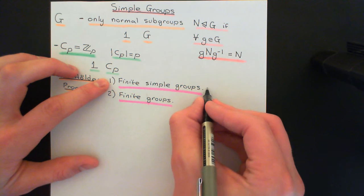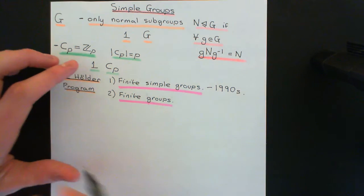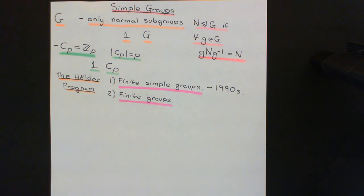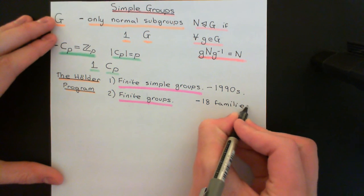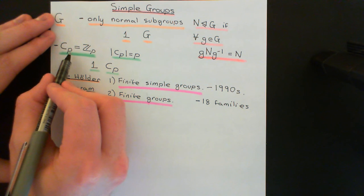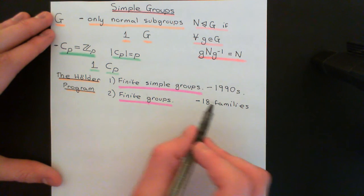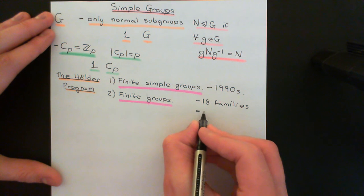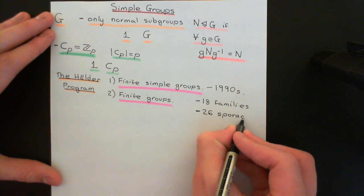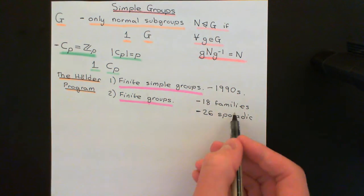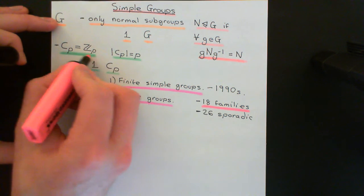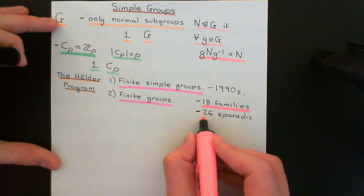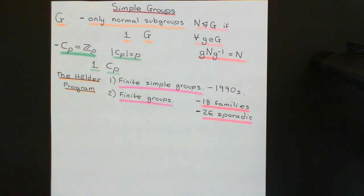Part one has been successfully completed — I believe this was completed in the 1990s, so it's been done for 20-something years. Mathematicians found that there were 18 families of finite simple groups, one of which is the family of all cyclic groups on sets of a prime number of elements. Then there are 26 what are known as sporadic finite simple groups — finite simple groups that are not in any of the 18 families.